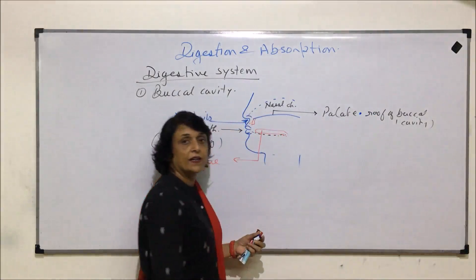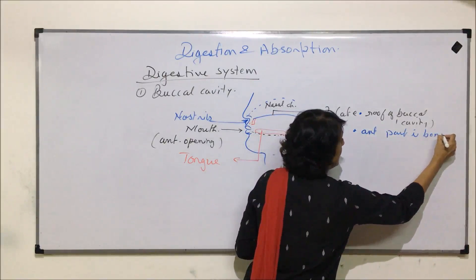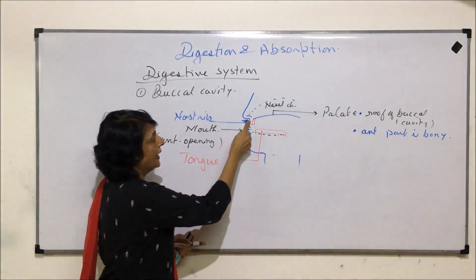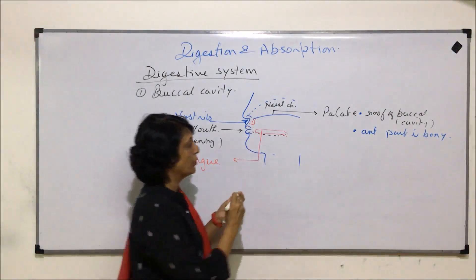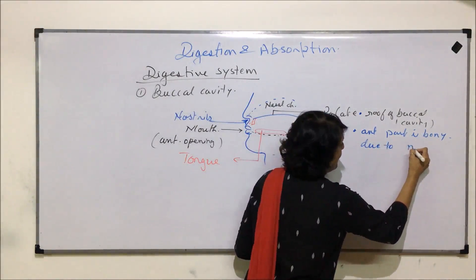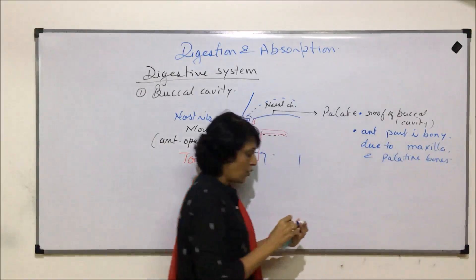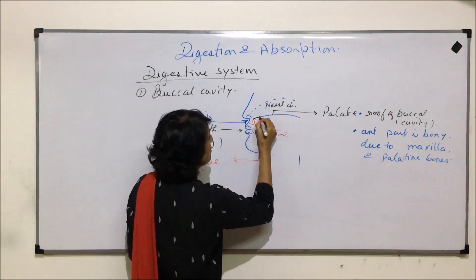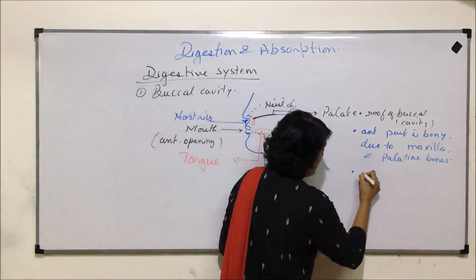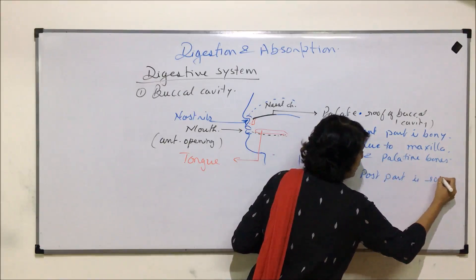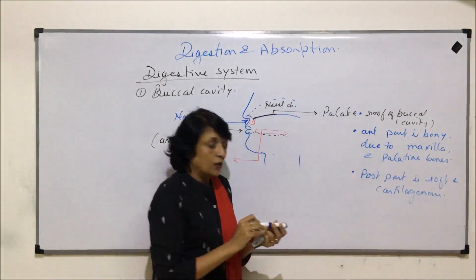The palate makes the roof of the buccal cavity. Its anterior part is bony because it is supported by bones. Anteriorly there is the upper jaw bone, that is the maxilla, and on the inner side there is the palatine bone. So the anterior part is bony due to the maxilla and palatine bones, while the posterior part is soft and cartilaginous.